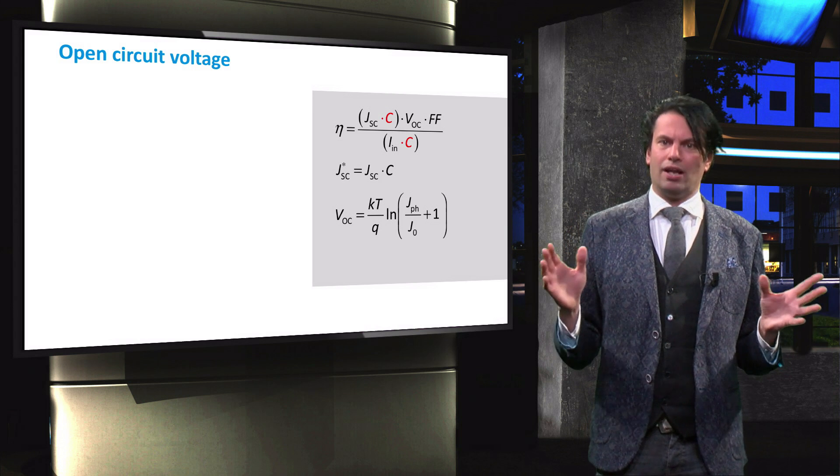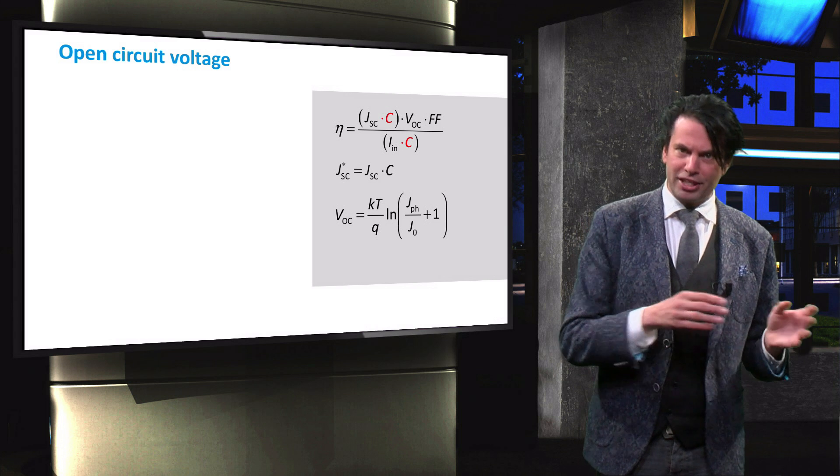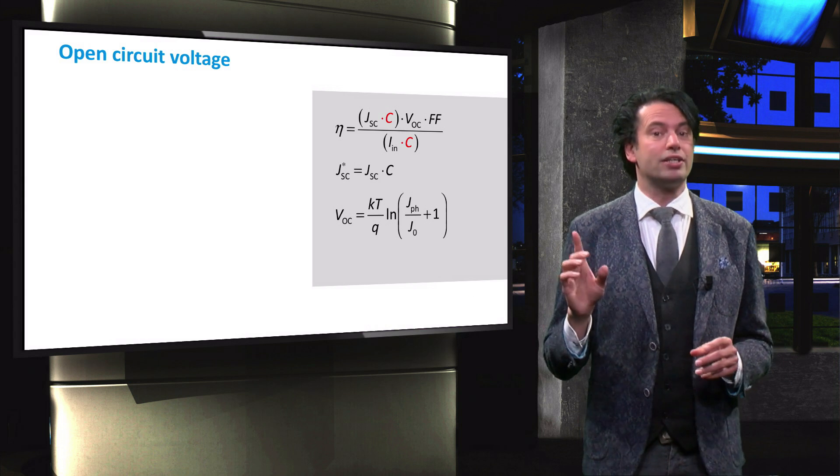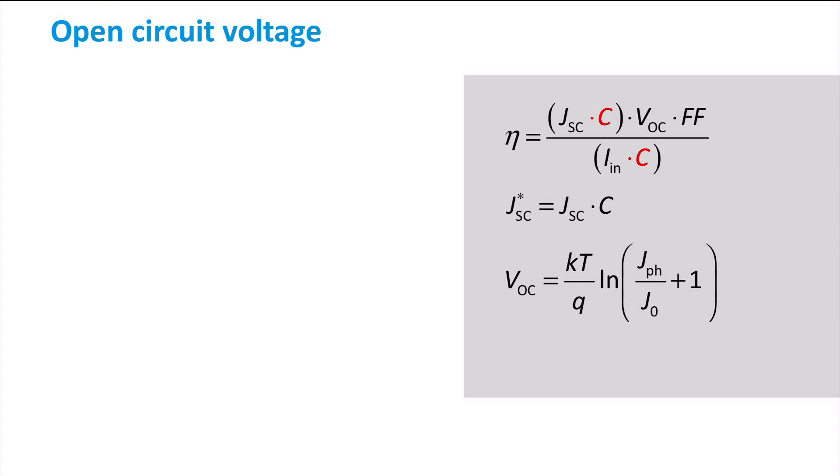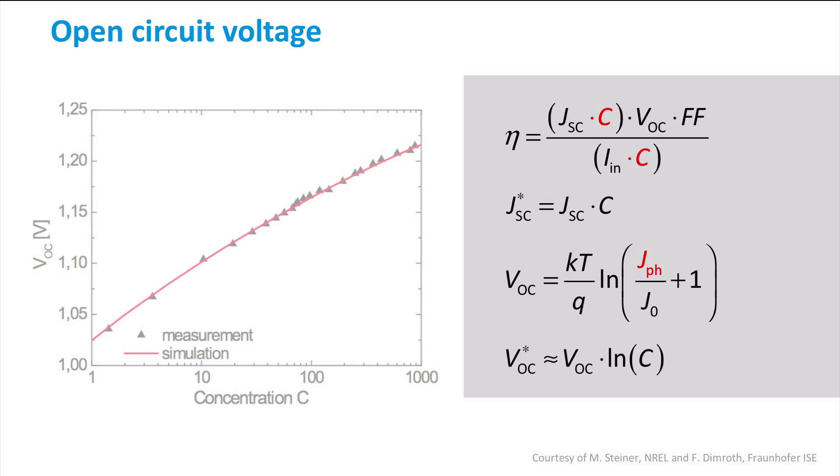Under concentrated light conditions, both the photocurrent and the recombination current will increase. Just like the JSC, the photocurrent increases almost proportionally with the light concentration. The increase of the recombination current is insignificant with respect to the photocurrent. The VOC will therefore show approximately a logarithmic increase with increasing light concentration.